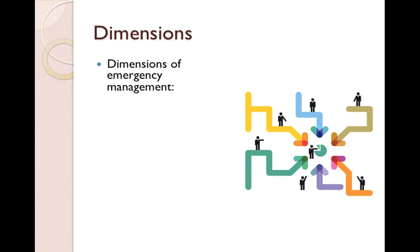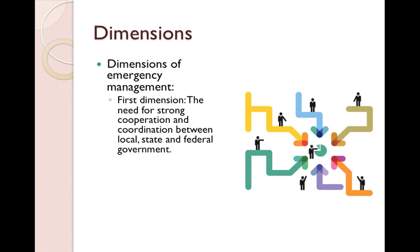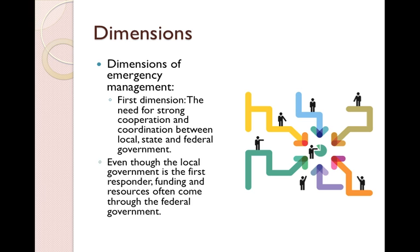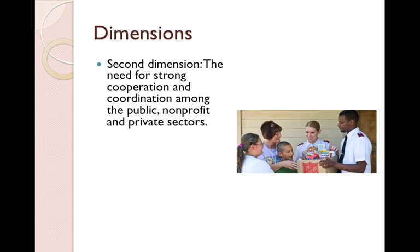The dimensions of emergency management include the first dimension, which is the need for strong cooperation and coordination between local, state, and federal government levels. Even though the local government is the first responder, funding and resources often come through the federal government. The second dimension is the need for strong cooperation and coordination among public, nonprofit, and private sectors.